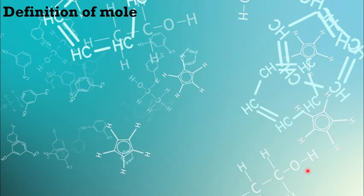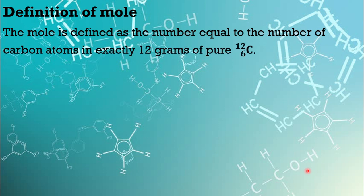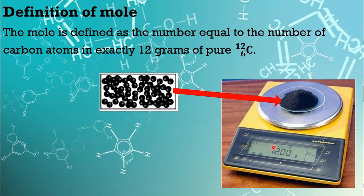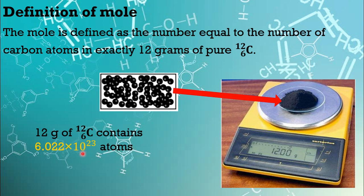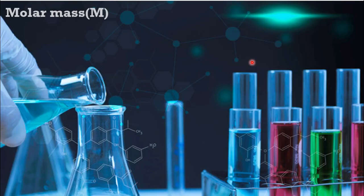Now, let's see what is the exact definition of mole. The mole is defined as the number equal to the number of carbon atoms in exactly 12 grams of pure carbon-12. If we measure exactly 12 grams of carbon-12 isotopes, it contains 6.022 times 10 to the power 23 carbon-12 atoms. That means one mole of carbon atoms. Now, you have an idea on what is a mole. Mole is just a number, and it is 6.022 times 10 to the power 23.